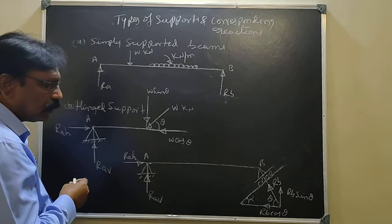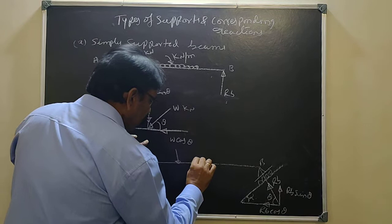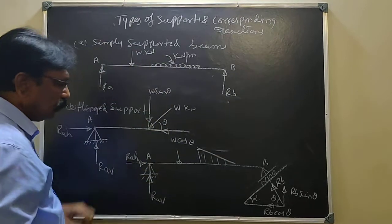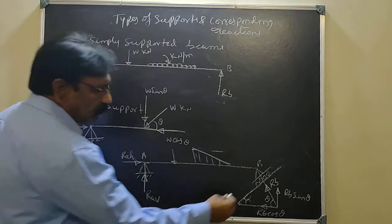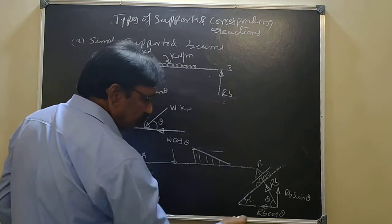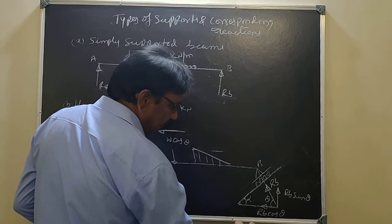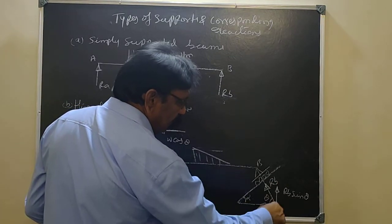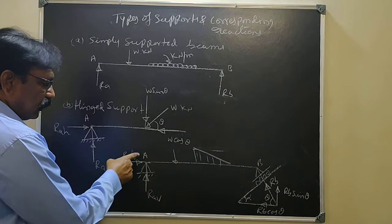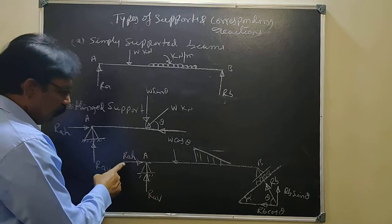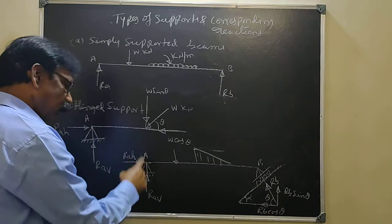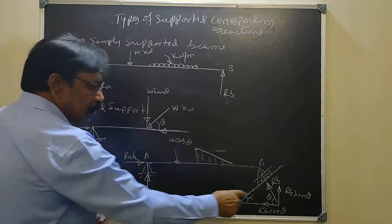Suppose all loads are vertical or a combination of loads. Even though the loads are vertically downward, if the other end is inclined, the reaction RB will be inclined. The resultant component of RB along the X-axis will be RB cos θ and along the Y-axis RB sin θ. To balance RB cos θ, a reaction RAH must develop in the opposite direction at the hinge. And to balance RB sin θ along with the downward loads, a vertical reaction RAV is also required.